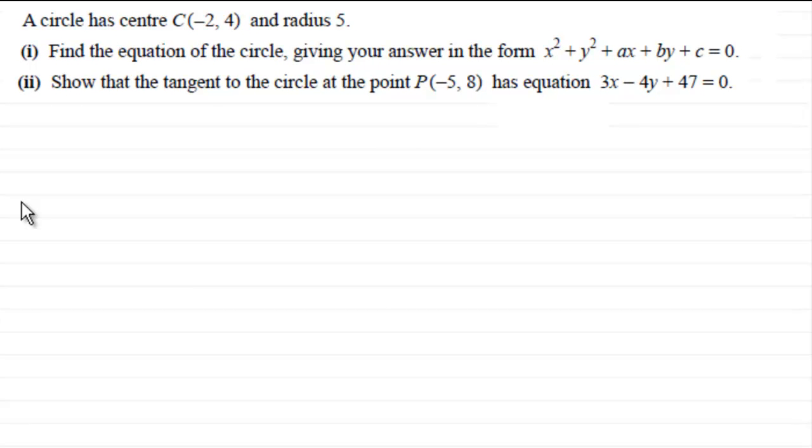Hi. Now, in this question, we're given that a circle has a centre C with coordinates (-2, 4) and a radius of 5. We've got to find the equation of the circle, giving the answer in this particular format. In part two, show that the tangent to the circle at the point P with coordinates (-5, 8) has the equation 3x - 4y + 47 = 0.